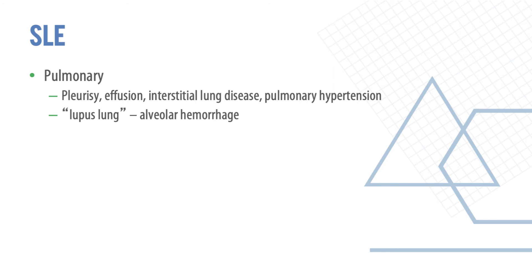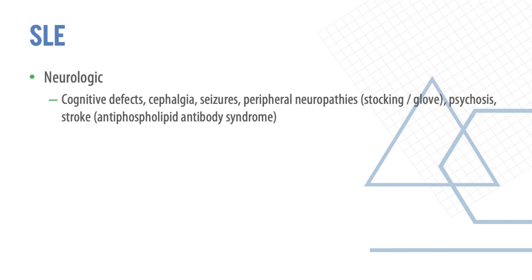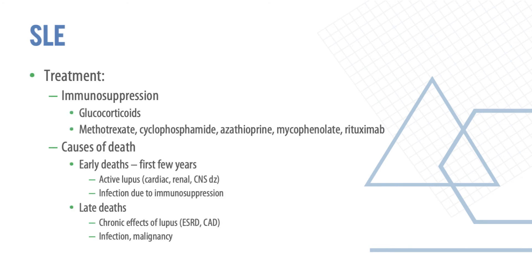Lung involvement can cause pleurisy, effusion, interstitial lung disease, pulmonary hypertension, and lupus lung associated with alveolar hemorrhage. The heart can be involved causing pericarditis or effusion, with increased risk for coronary artery disease. Renal involvement leads to lupus nephritis with elevated creatinine, proteinuria, and hypertension. Neurological involvement can cause cognitive defects, headache, seizures, peripheral neuropathies, psychosis, and stroke. Musculoskeletal involvement can lead to arthritis, atrophy, and tendon rupture. Treatment includes immunosuppression with glucocorticoids, methotrexate, and cyclophosphamide. Causes of early death include active lupus, cardiac, renal, or CNS disease, or infection due to immunosuppression; late deaths can result from chronic effects of lupus, infection, or malignancy.